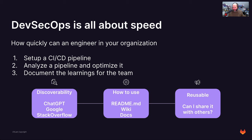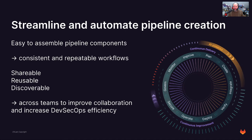Maybe there's a wiki or external documentation available. DevSecOps in general — we want it to be reusable, so we don't reinvent the wheel all the time. The idea is: can I share it with others? Because we are collaborating and want to get more efficient. We want to streamline and automate pipeline creation, making it easy to assemble using pipeline components that are consistent and repeatable — not everyone building their own silos. Pipelines and components should be shareable, reusable, and discoverable across teams to improve collaboration and increase DevSecOps efficiency.